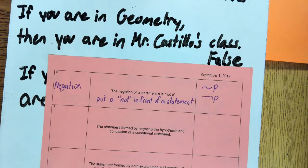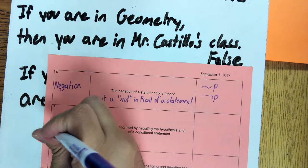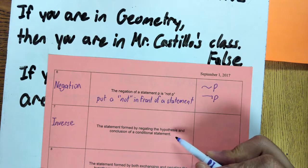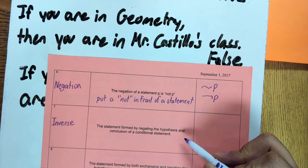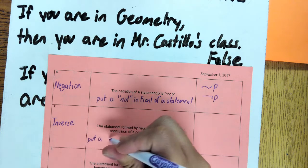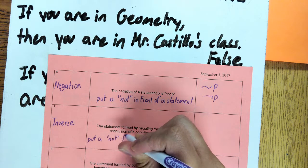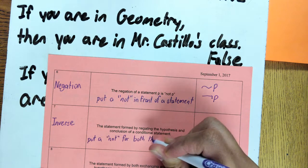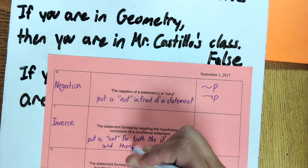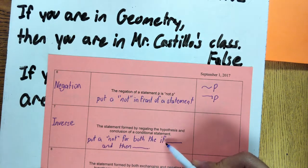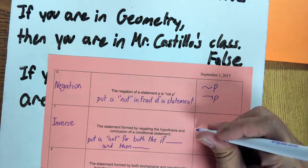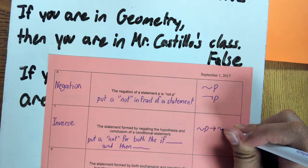Now let's use negation. Negation is used in an inverse. An inverse is the statement formed by negating the hypothesis and the conclusion of a conditional statement. In other words, put a 'not' for both the 'if blank' and 'then blank.' So it becomes: if not P, then not Q. The notation for that is not P, arrow, not Q.